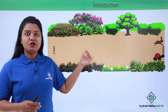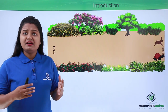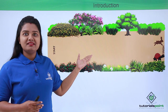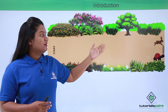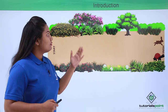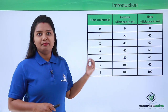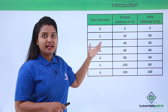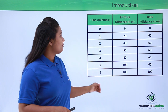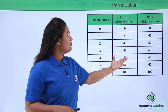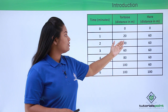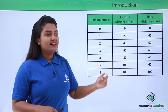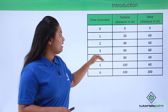The tortoise was the winner of the race. What we are going to do is analyze the kinds of motion made by these two animals — the hare and the tortoise. This is the data of the whole race in tabular form. The first column gives information about time in minutes, the second column gives the distance travelled by the tortoise in meters, and the third column gives the distance covered by the hare in meters at the end of every minute.